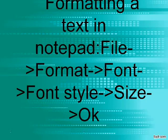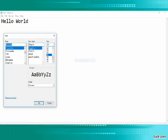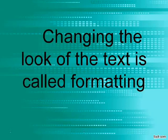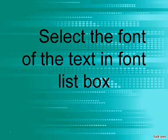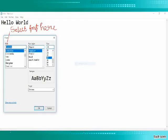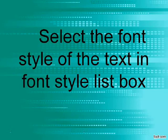Formatting text in Notepad: File, Format, Font, select font style and size, OK. Changing the look of the text is called formatting. Select the font of the text in the Font list box. Select the font style of the text in the Font Style list box.